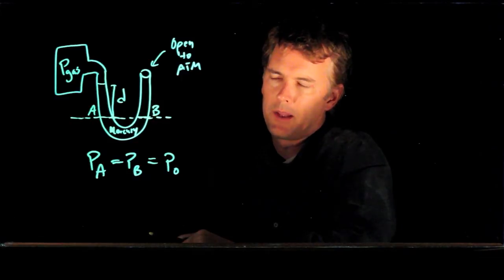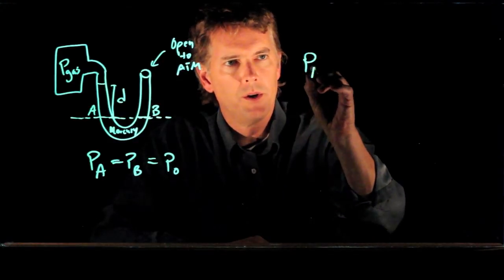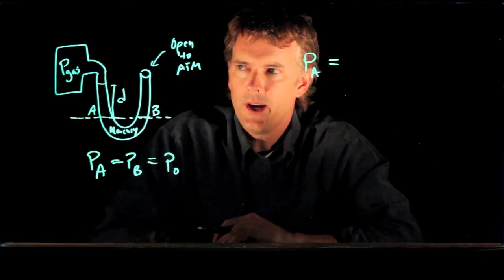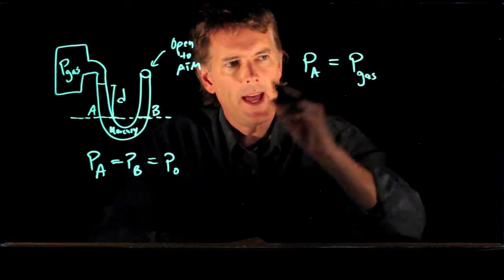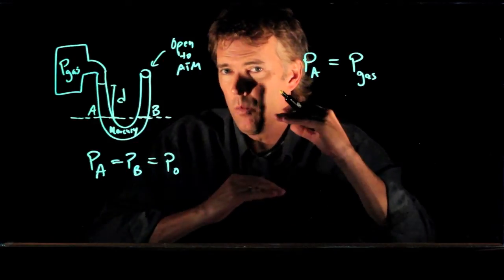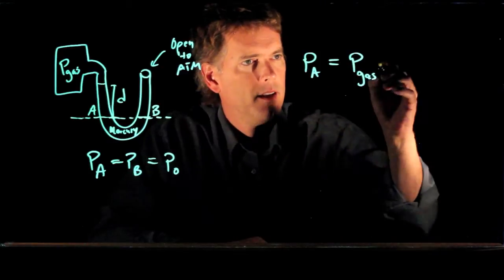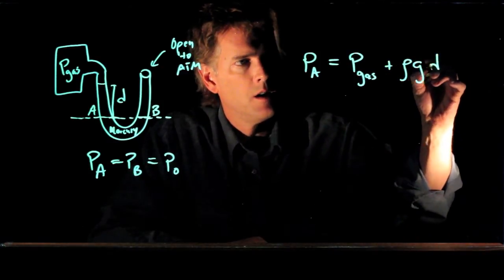Alright, so now let's think about the pressure on the left side tube. What do we know? We know that P A equals the pressure above it, which is the pressure that's in that gas chamber, plus any weight of the fluid that's above it, the pressure due to that, which is rho G D.